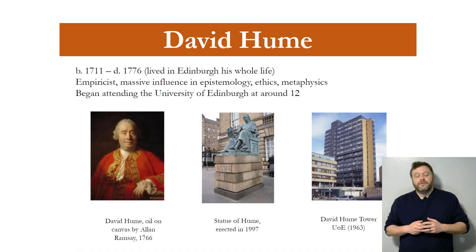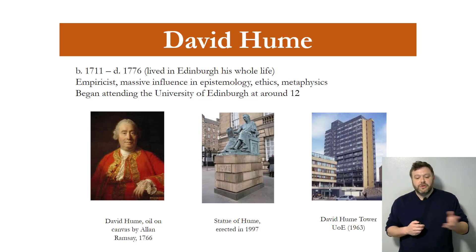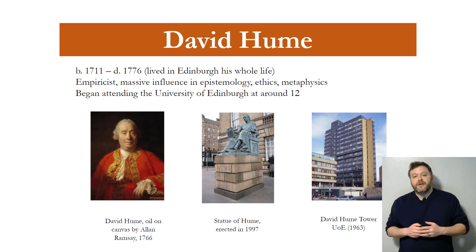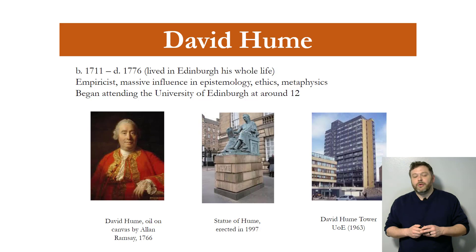David Hume was hands down the most important philosopher within the Scottish Enlightenment and really one of the most important and influential philosophers of all time. That's a painting of him on the left there, commissioned during his lifetime. In the middle is a statue of him in his hometown of Edinburgh. His right toe is all bronzed because people rub it for good luck — and good lord, he would have hated that.